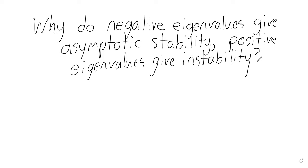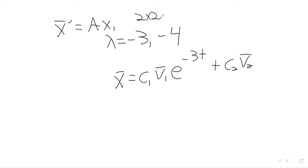The answer comes directly from the solution, if you think of what the solutions look like. Say we're looking at x prime equals ax, and a is two by two. And we have two negative eigenvalues, say negative three and four. Then our solution is going to be an eigenvector times e to the first eigenvalue, and an eigenvector times e to the second eigenvalue.